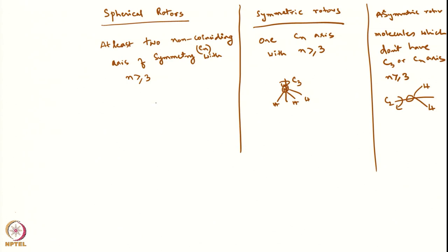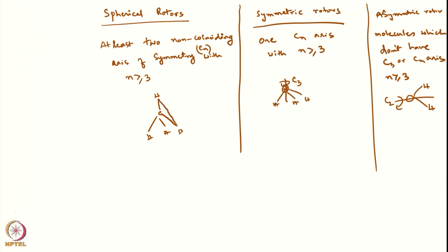For methane, if you think of two planes, each plane will have one C3 axis. Since there are two C3 axes which do not coincide with respect to each other, methane becomes a spherical rotor. One can look at textbooks for a list of how various molecules are classified as spherical rotors, symmetric rotors and asymmetric rotors.